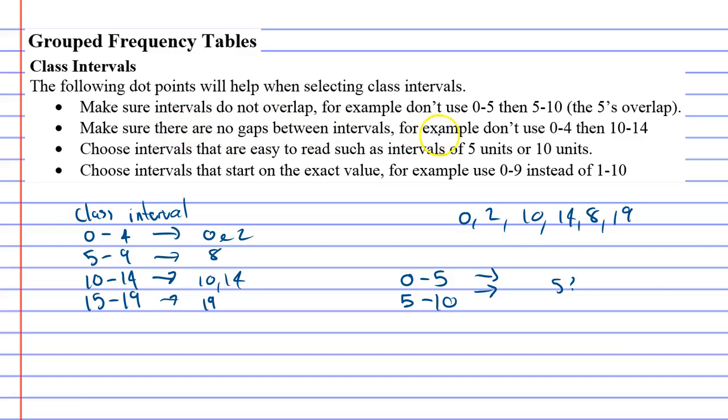Second dot point says make sure there are no gaps between intervals. For example, don't use 0 to 4 then 10 to 14. That's basically saying you can't just go 0 to 4, skip 5 to 9, and go straight to 10 to 14.